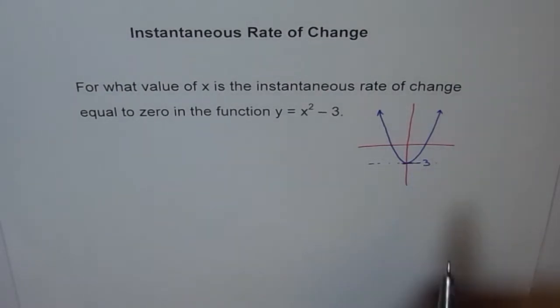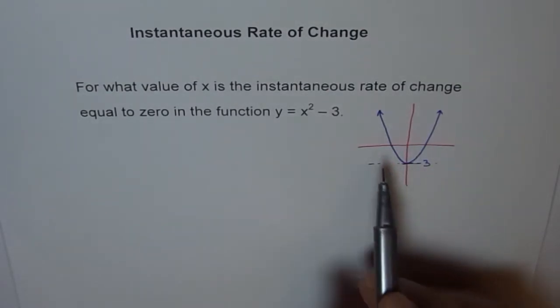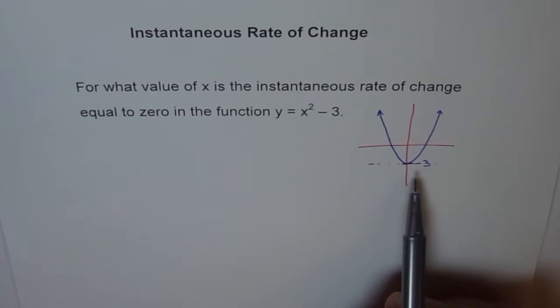So here if I draw a slope, it will be a horizontal line. So that will give me a 0 instantaneous rate of change.